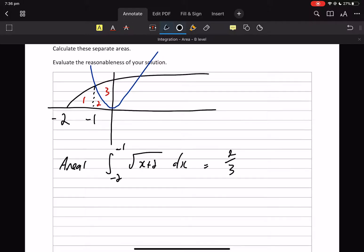Area 2 is going to be the integral from -1 to 0, and it's going to be under the x². And I think we're going to get 1/3.